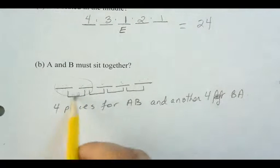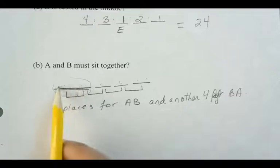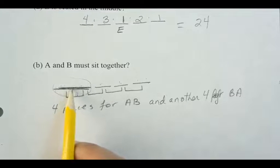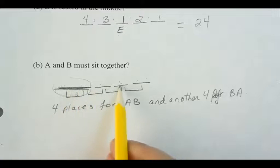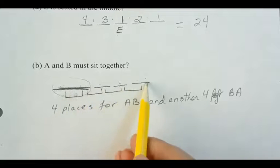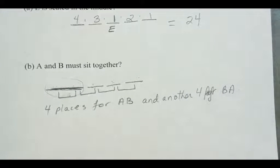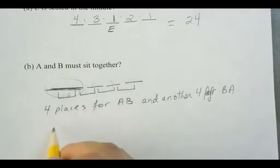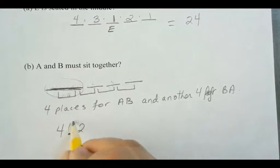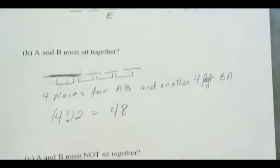When A and B are treated as one unit, we effectively have four spots to arrange. So there are 4 factorial ways to arrange the four units, multiplied by 2 because it could be A-B or B-A. That gives us 4! × 2 = 24 × 2 = 48. So there are 48 different ways to seat everyone when A and B must sit together.